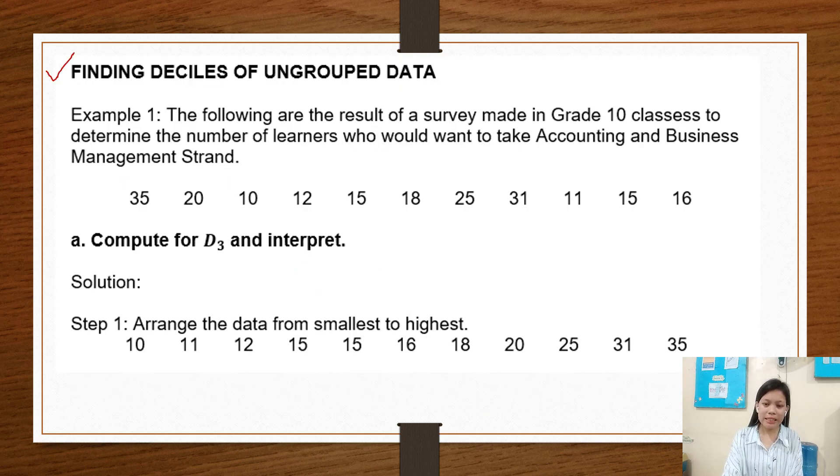Finding the decile of ungrouped data, Example 1. The following are the results of a survey made in Grade 10 classes to determine the number of learners who would want to take Accounting and Business Management strand. The data are: 35, 20, 10, 12, 15, 18, 25, 31, 11, 15, 16.